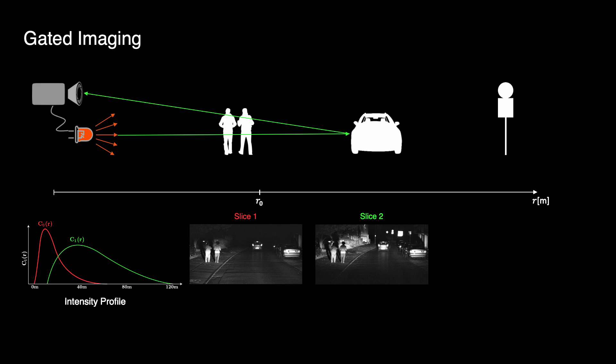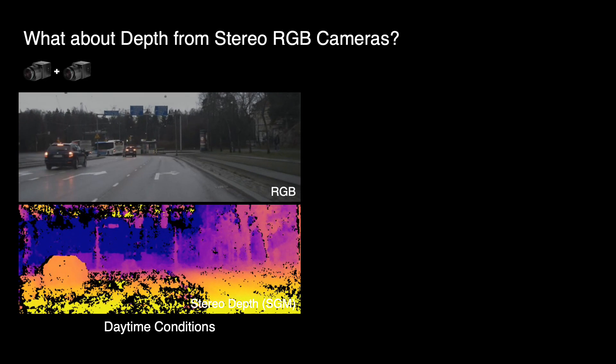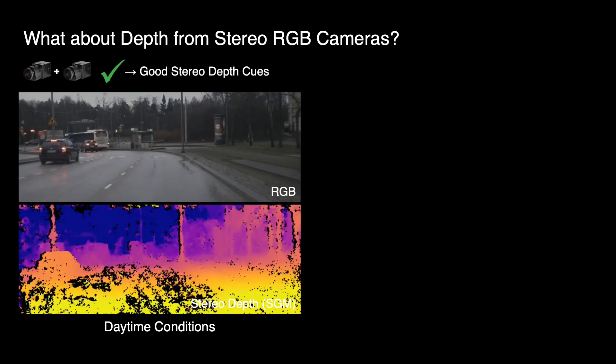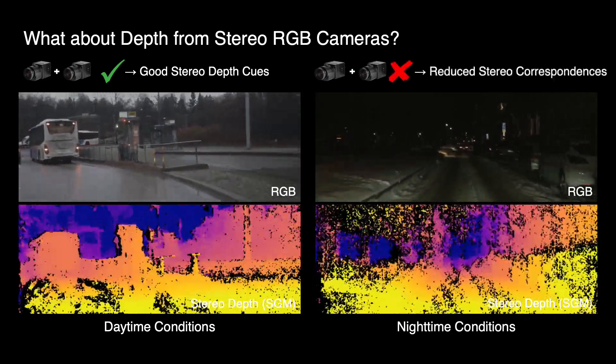By varying the delay between laser pulse emission and camera gate, parts of the scene with different depths can be illuminated and implicit 3D depth information is incorporated into 2D intensity images. We illustrate here a scene with pedestrians, cars and traffic signs in the background. Conventional RGB stereo cameras are also able to extract 3D information from a pair of rectified images by triangulation of corresponding points.